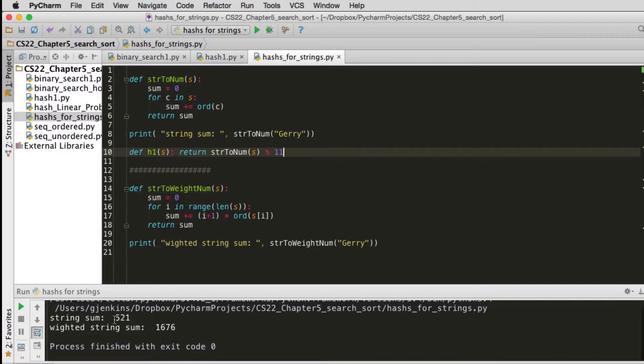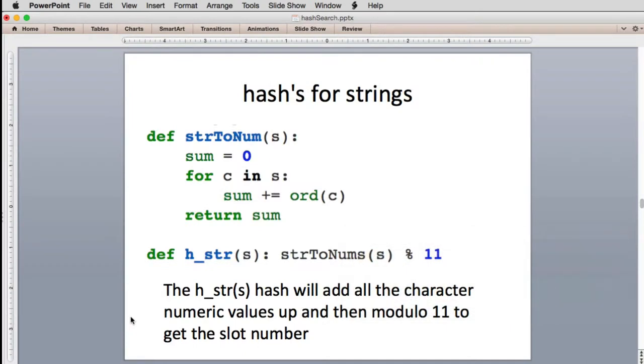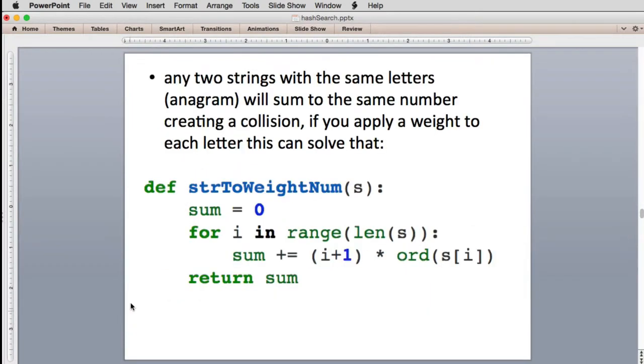So it says my name is 521. That's if you add up all the characters. Now there's a problem with this: if there are two strings with the same exact letters, in other words an anagram, they will always add up to the same total number. So anagrams will always conflict and pick the same slot.